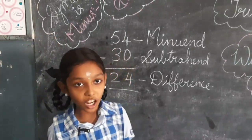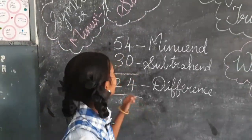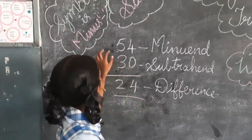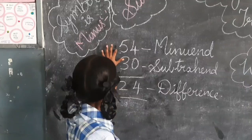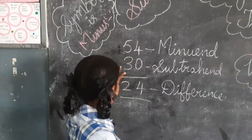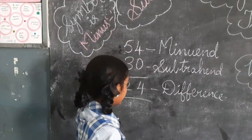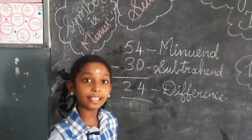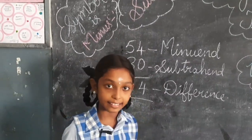Thank you, Raghav. Remember, in subtraction, the minuend should always be greater than the subtrahend. Now let us see an example.